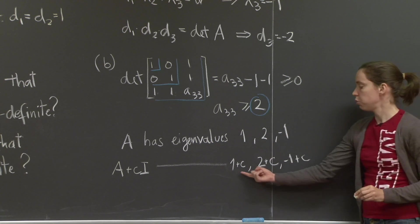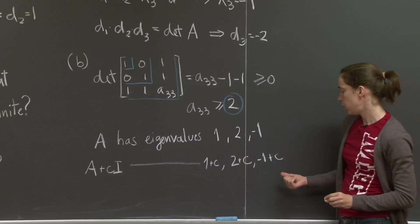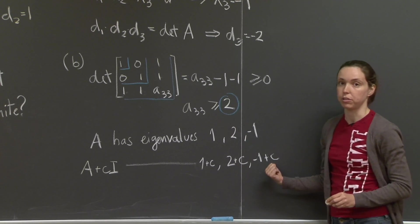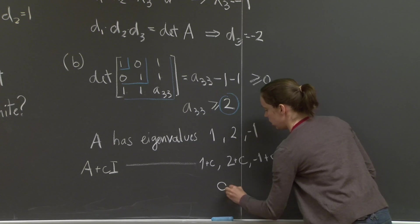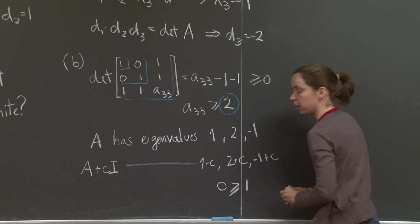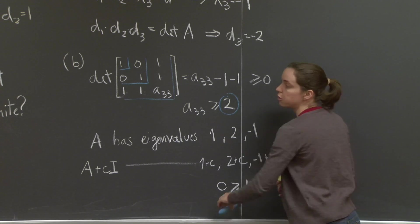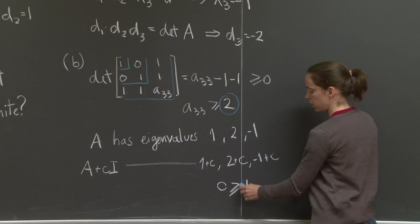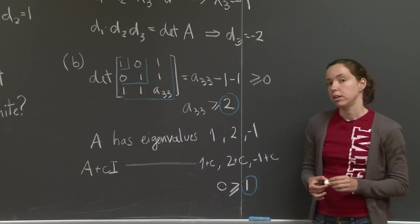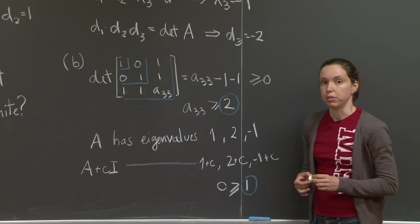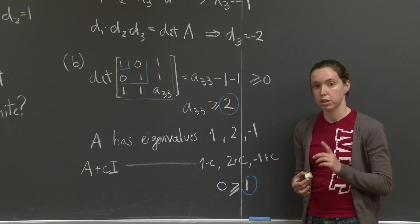And I want each one of these to be non-negative. For that to be true, I have to have c greater than or equal to 1. So the smallest value that c can take that will make the matrix A positive semi-definite is 1. That solves parts A and B of this question. There is a part C to this question. Let me show it to you.